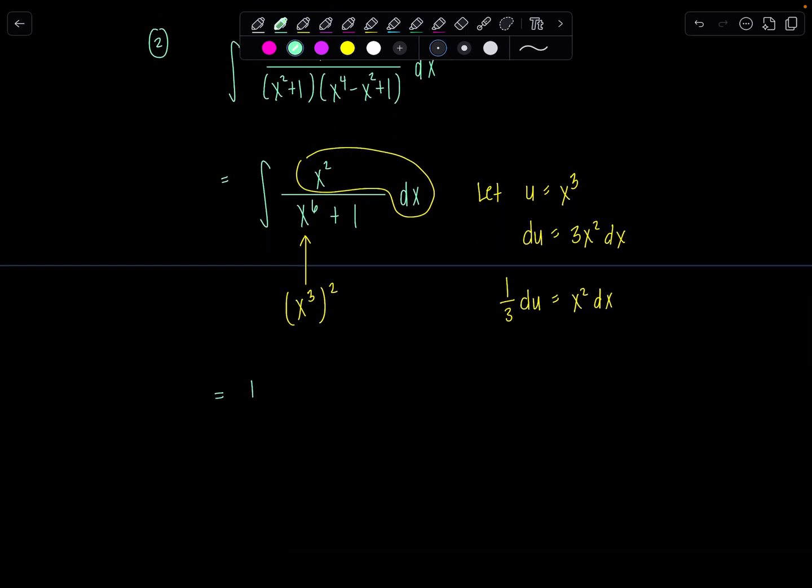And we can make a lovely u sub right now. Let me put the one third outside, du up top, over x cubed squared is now u squared plus one.